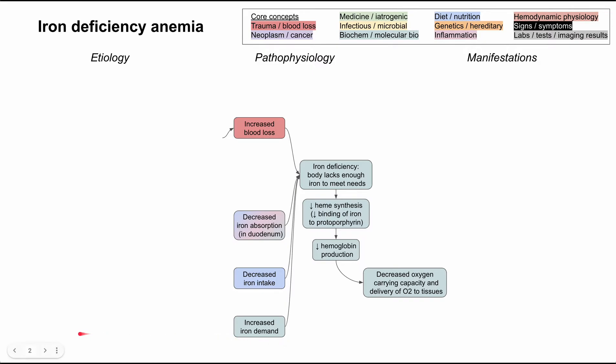Let's go into more detail on increased blood loss. This can happen through trauma — for instance, after a car accident, you might be bleeding from a cut artery or vein, or you can have internal bleeding. All of that counts as blood loss where blood is no longer in your circulatory system, and your body then has to make more hemoglobin using iron to replenish that lost blood.